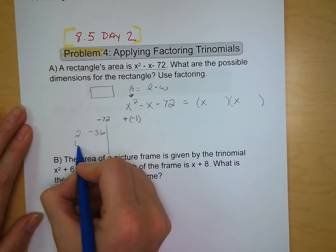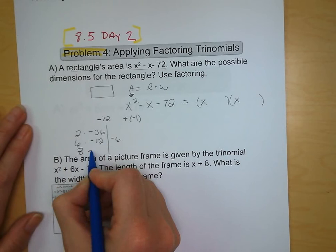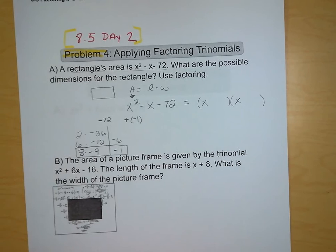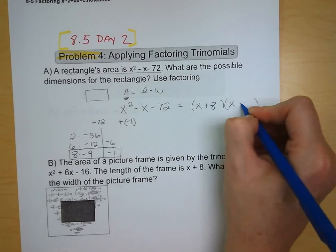We also have 8 and -9, which adds up to -1, which is what we're going for. So our two factors are going to be (x + 8) and (x - 9). There we go. It's as simple as that.